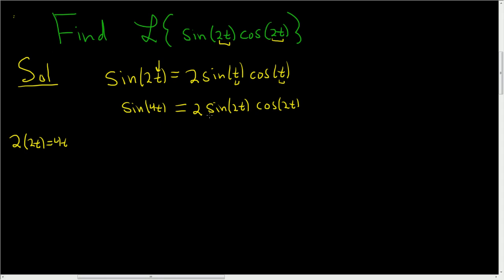Almost what we want. We don't have a 2 here, so we'll divide both sides by 2. And so we get sine 2t cosine 2t equals one half sine 4t.